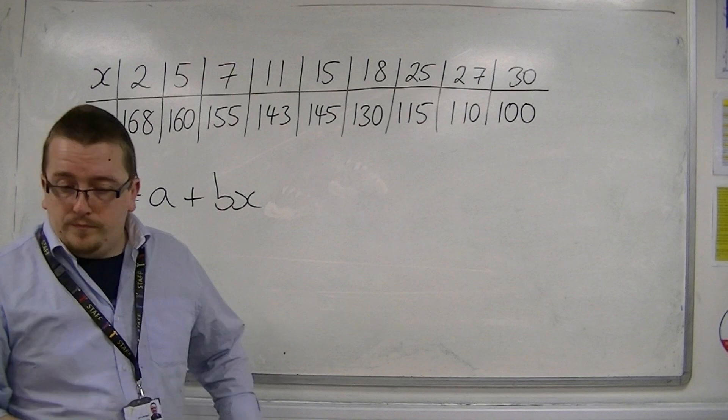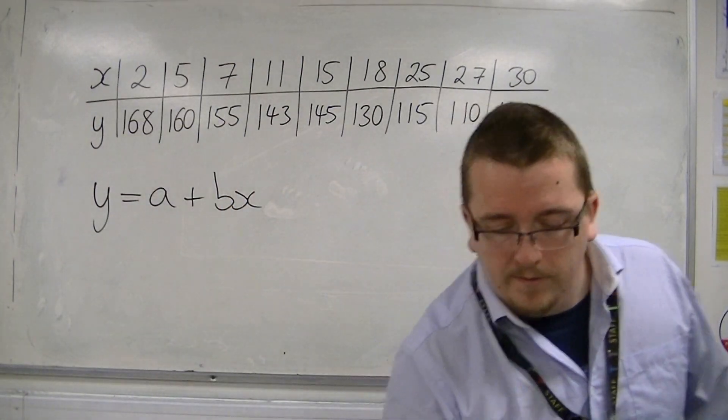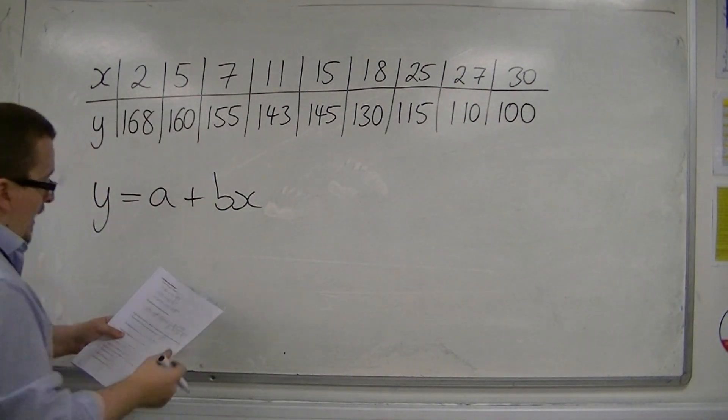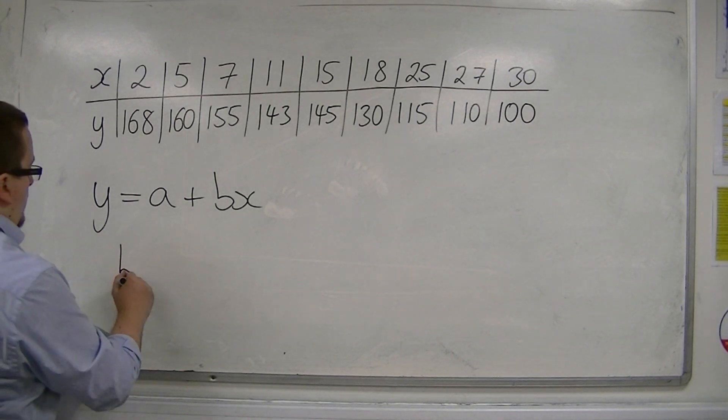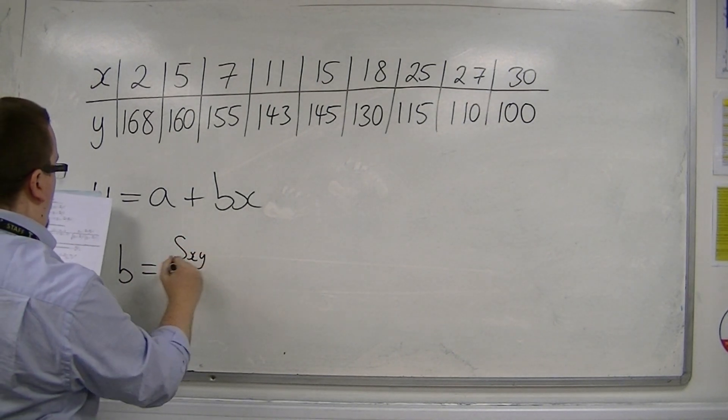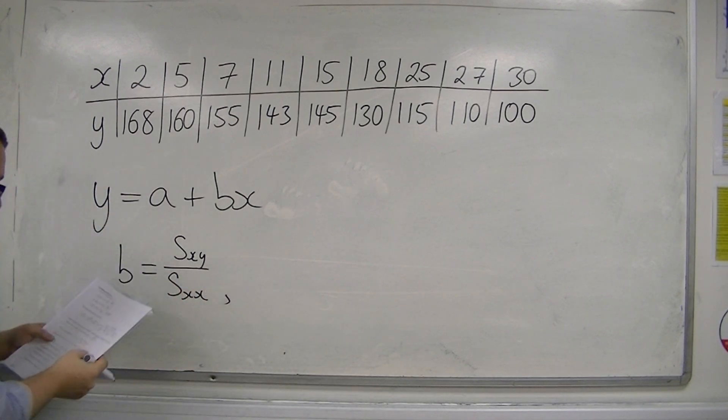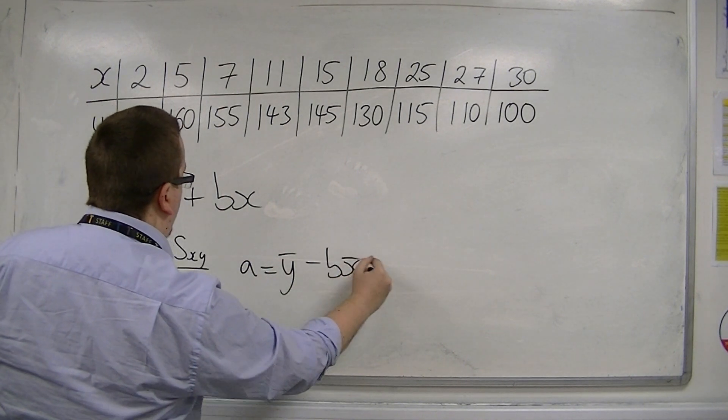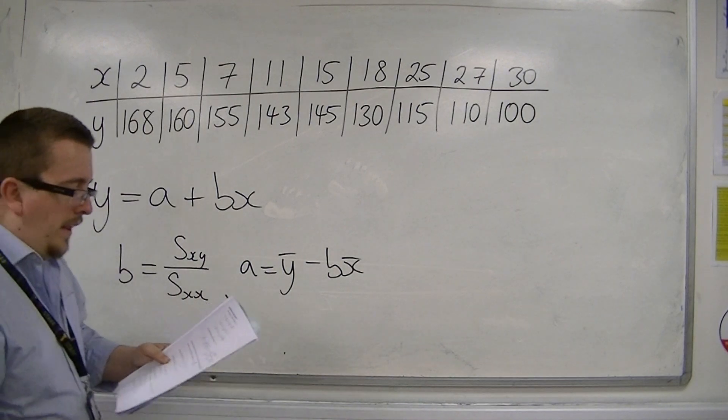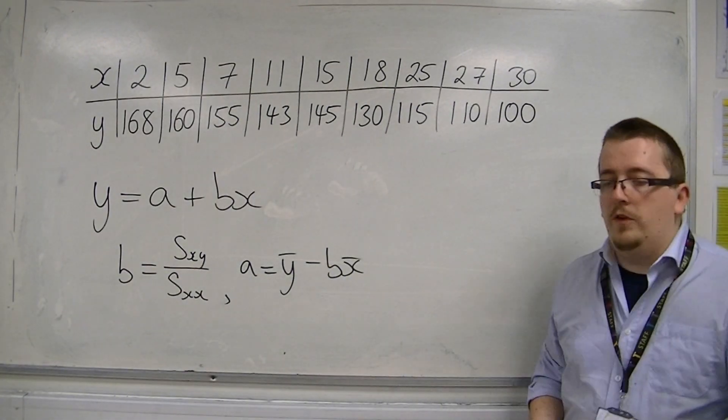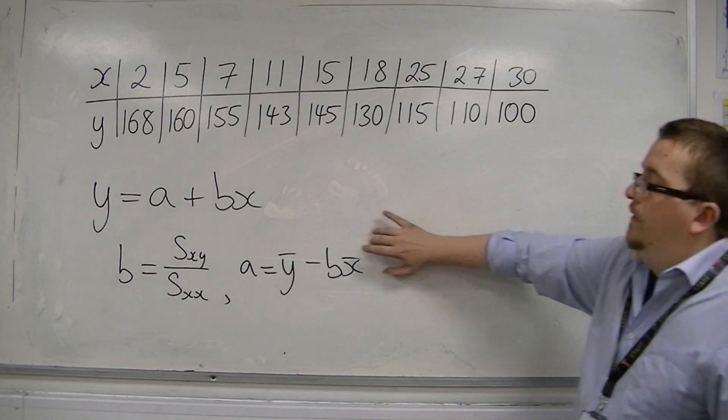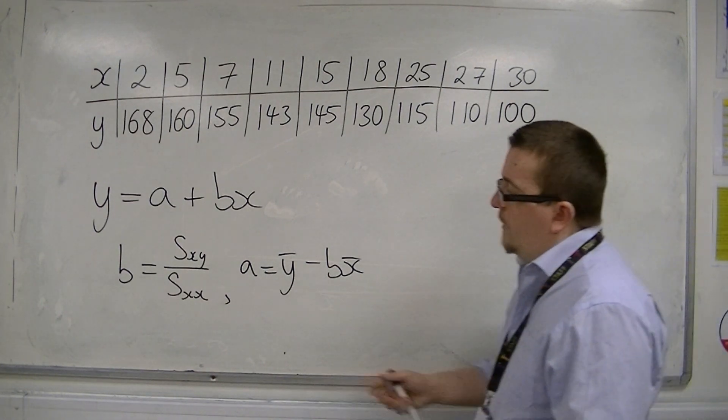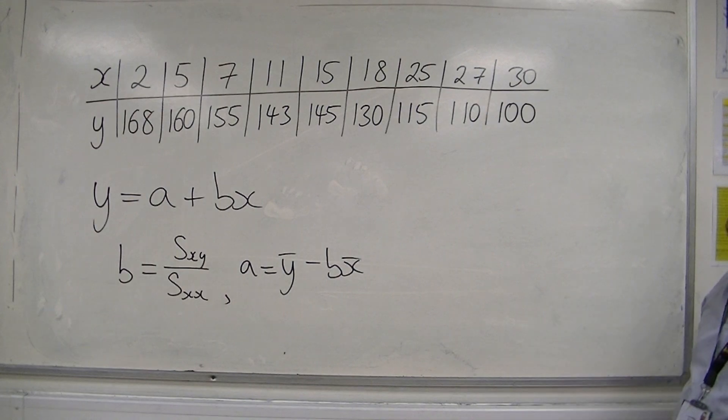The actual form of that can be found in your formula booklet. So on page 13, you're told that b is equal to sxy over sxx, and you're also told on the next line that a is equal to y bar minus bx bar. So if you don't have the option of using the TI-82 stats, then these formulas are there for you to use. They're in the formula booklet, and it does give an expanded version of that one if you had to do this longhand.